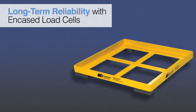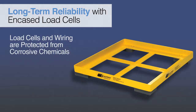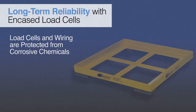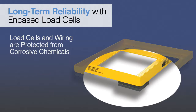To ensure long-term reliability, Scaletron's design protects all four load cells and wiring from corrosive chemicals by completely encasing them in individual PVC enclosures, effectively sealing them off from corrosive agents. As a result, the life of the load cells and wiring is greatly extended, reducing the often high component replacement costs and associated labor demands.